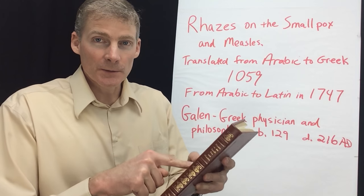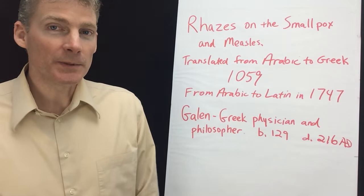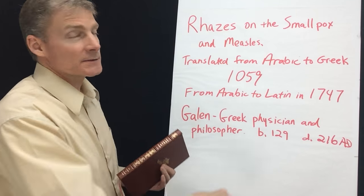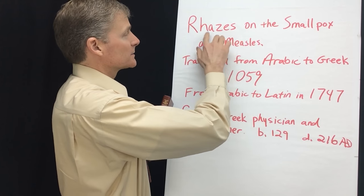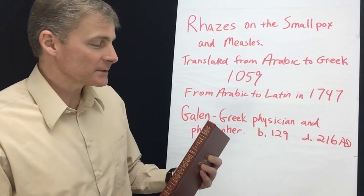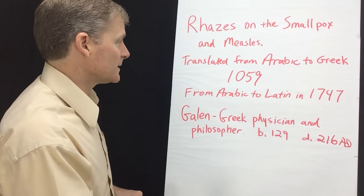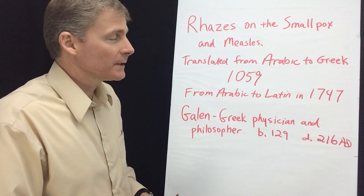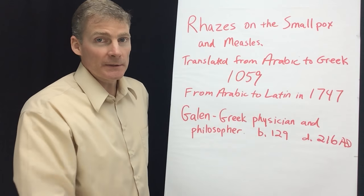I'm going to tell you what this book is saying — I ended up buying it and I have to share what I found. The name of the book is from a guy named Rhazes. This is in Arabia, and the name of the book is 'Rhazes on the Smallpox and Measles.' This edition was from 1987, but the original writing's date is unknown. It was translated from Arabic to Greek in the year 1059.